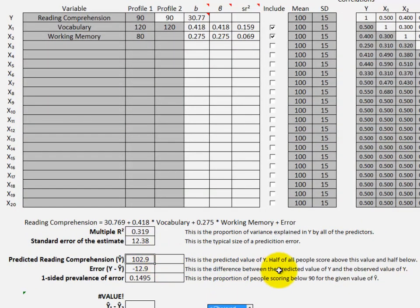The predicted reading comprehension score is no longer 110 but 102.9. 90 is 12.9 points below that. For a person with this profile of predictors, 120 on vocabulary and 80 on working memory,